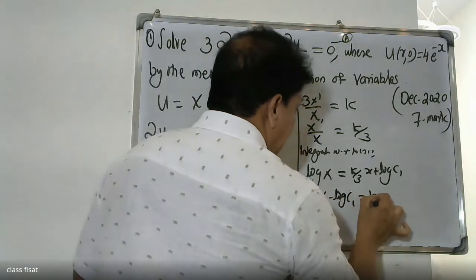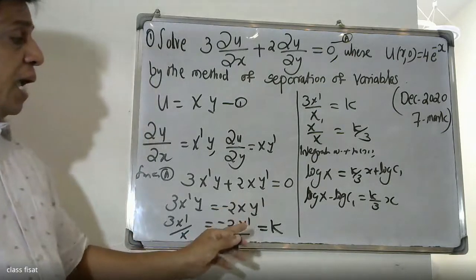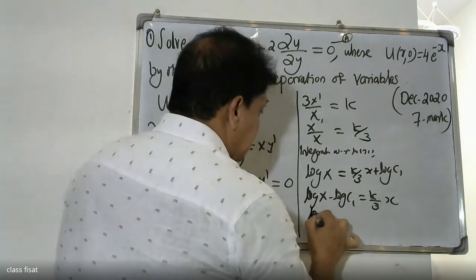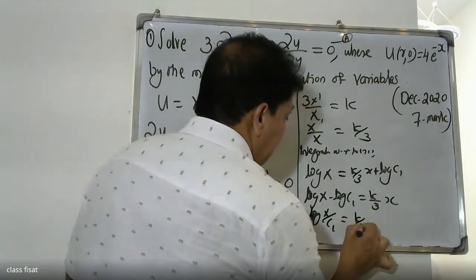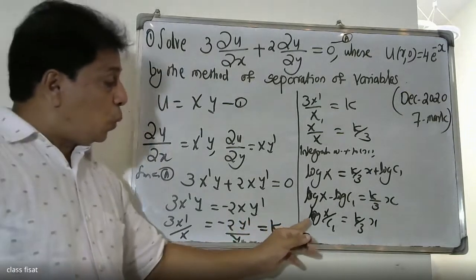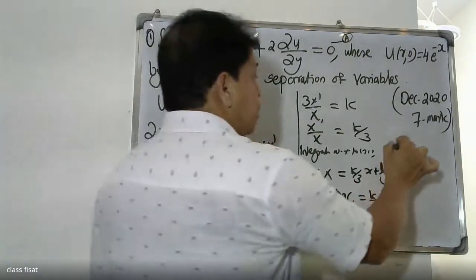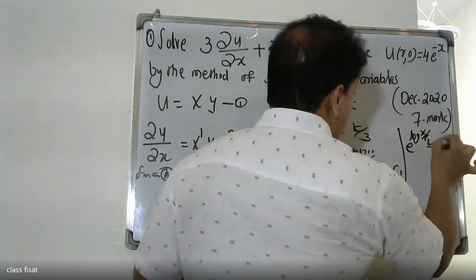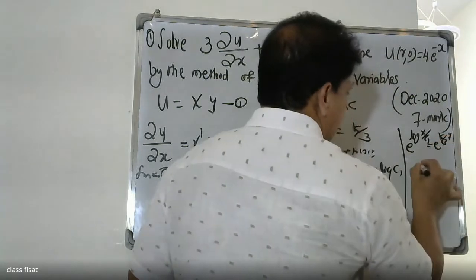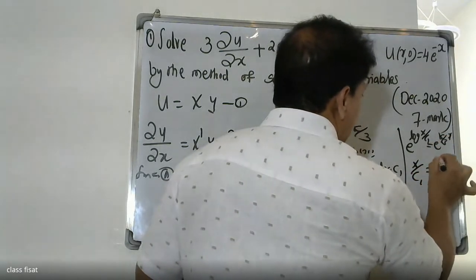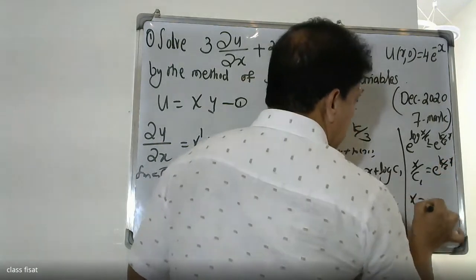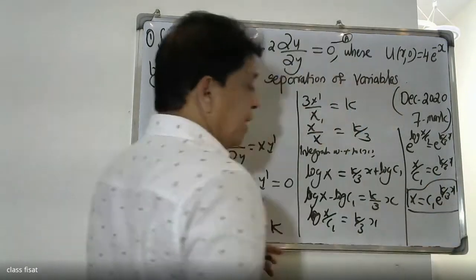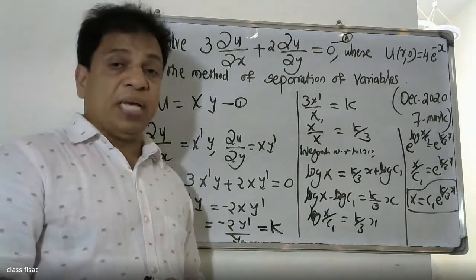So log X − log c1 = k/3·x. Using the formula log a − log b = log(a/b), we get log(X/c1) = k/3·x. Therefore X/c1 = e^(k/3·x), and so X = c1·e^(k/3·x).